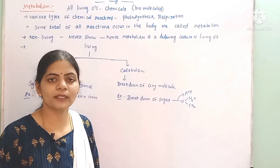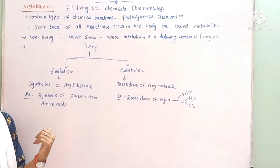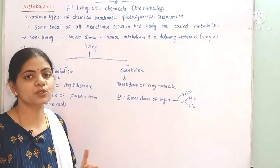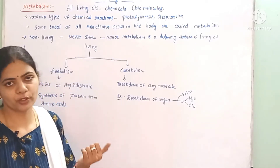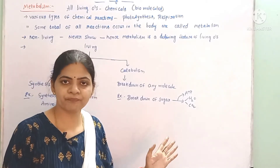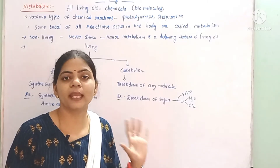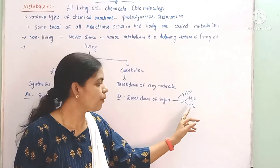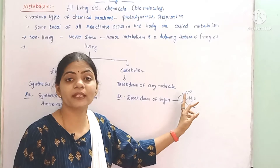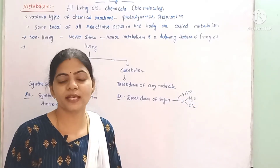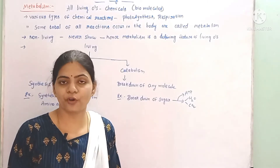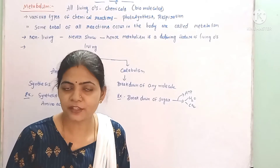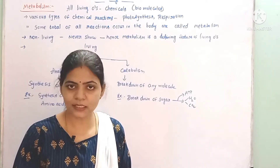An example of anabolism is the synthesis of proteins from amino acids. An example of catabolism is ATP generation from sugar — the sugar molecule is broken down into water and carbon dioxide to liberate ATP, which is used as an energy source by the living organism.